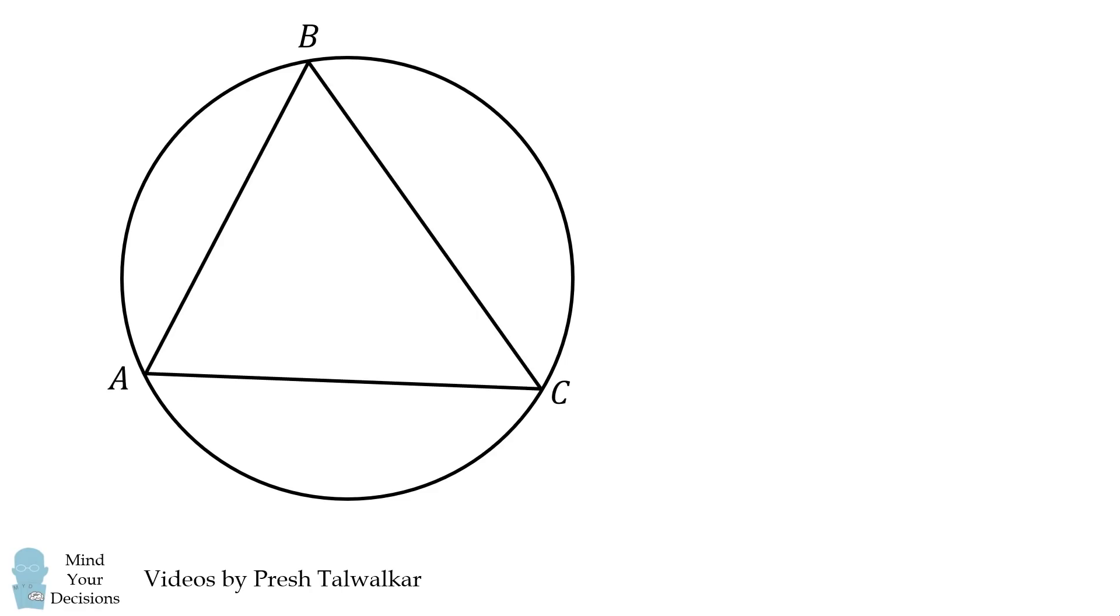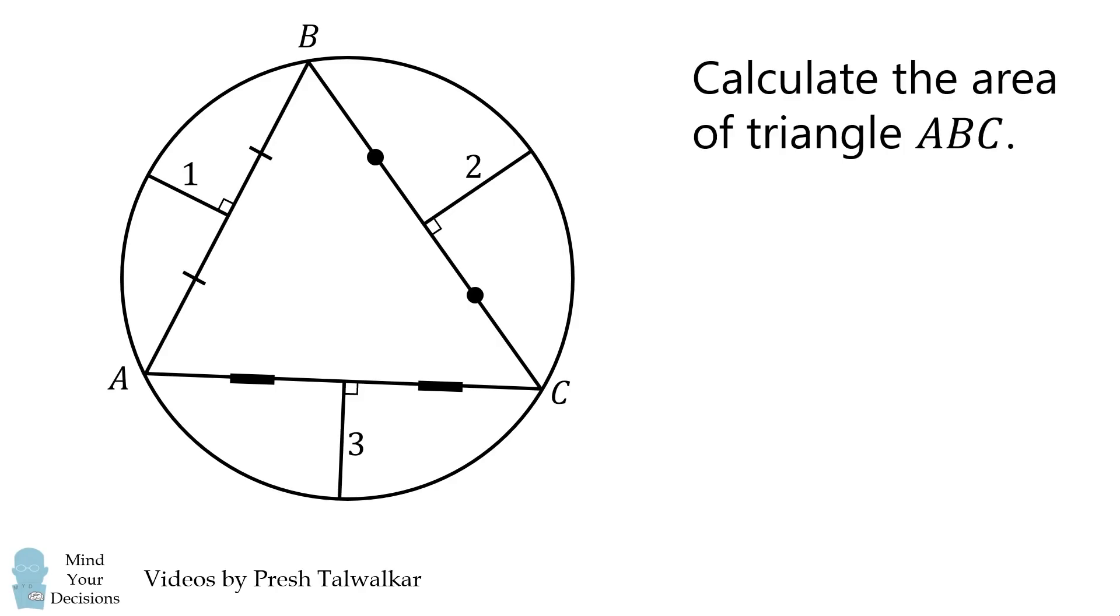Mind your decisions. I'm Presh Talwalkar. A circle contains triangle ABC. From each side of the triangle, construct the perpendicular bisector of the side and connect it to the boundary of the circle. These line segments have lengths of one, two, and three. The problem is to calculate the area of triangle ABC.